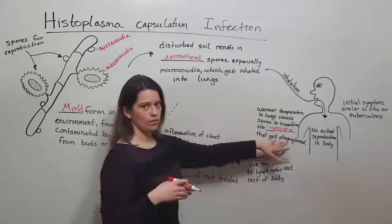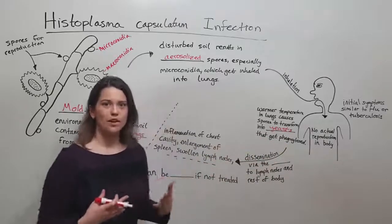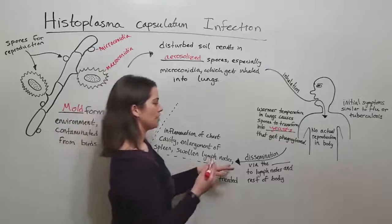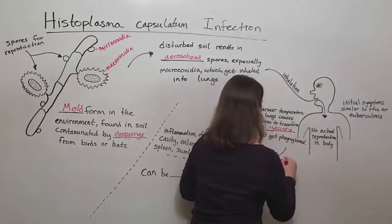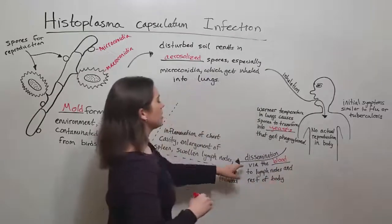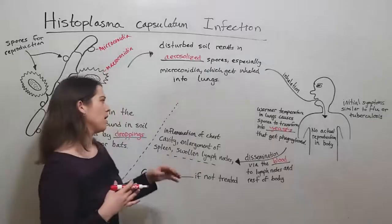The yeast cells end up traveling through phagocytes throughout the entire body. So it becomes very disseminated through the body, and they're traveling via the bloodstream. And in particular, they're traveling in the blood to lymph nodes and to the rest of the body.